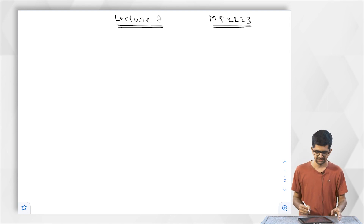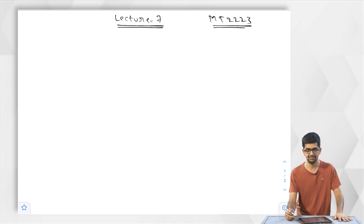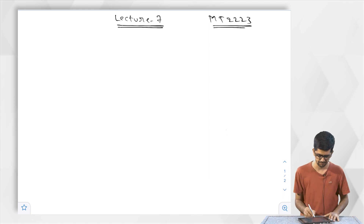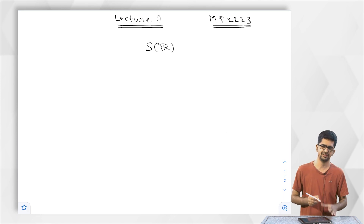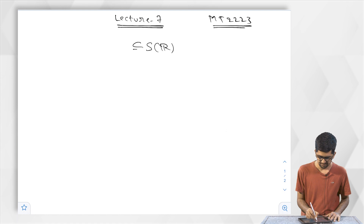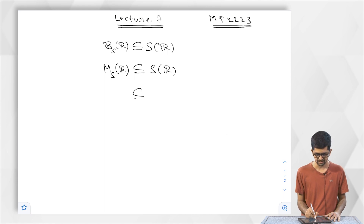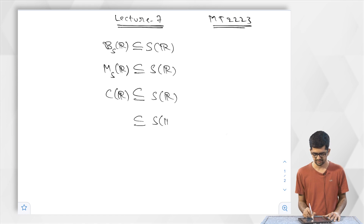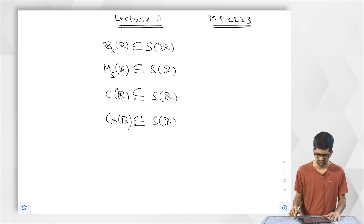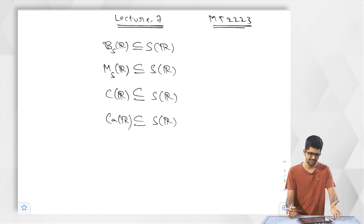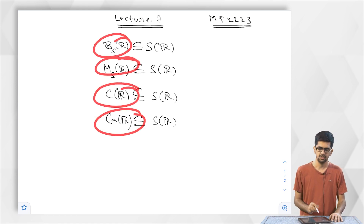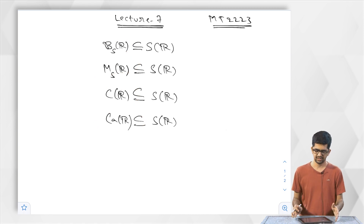In the last sessions, what we have seen is the notion of sequences of real numbers, and we mentioned four special classes of sequences. Let me denote SR as the notation for sequences in R. The first is bounded sequence in R (BSR), then monotone sequences in R, then convergent sequences in R (CR), then Cauchy sequences in R. We only stated the definitions and did no examples. In this session and maybe the next two, we will do some examples of sequences and see which are bounded, monotone, convergent, and Cauchy.